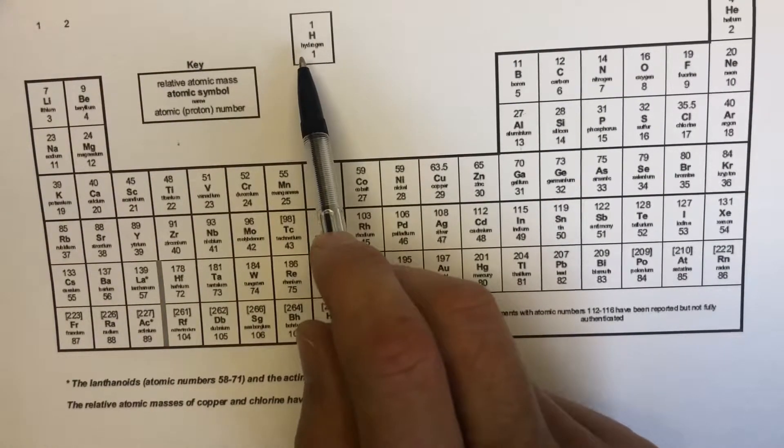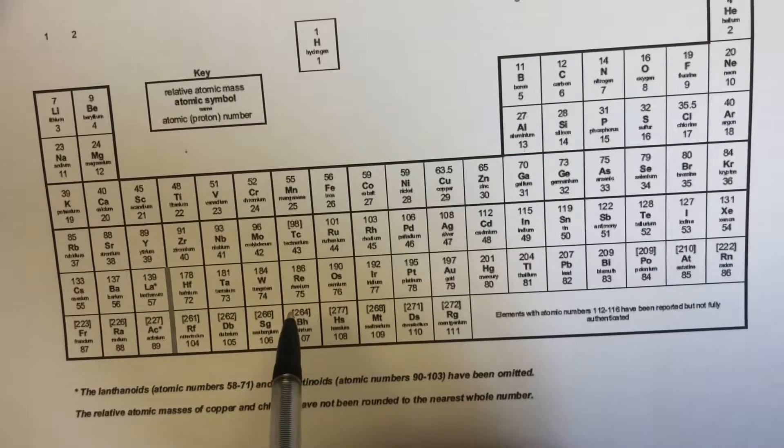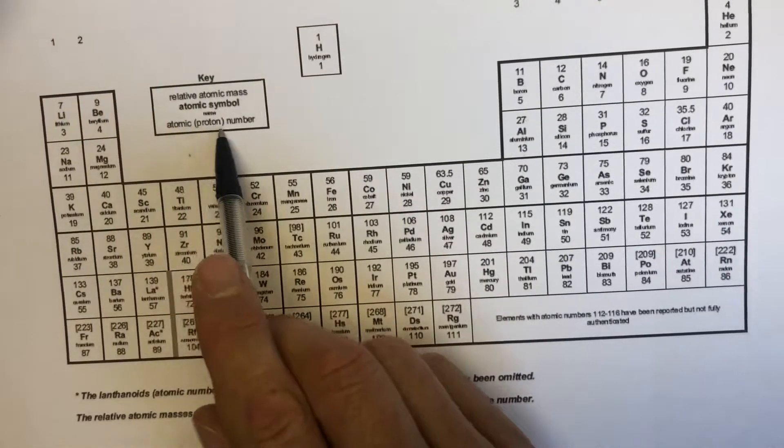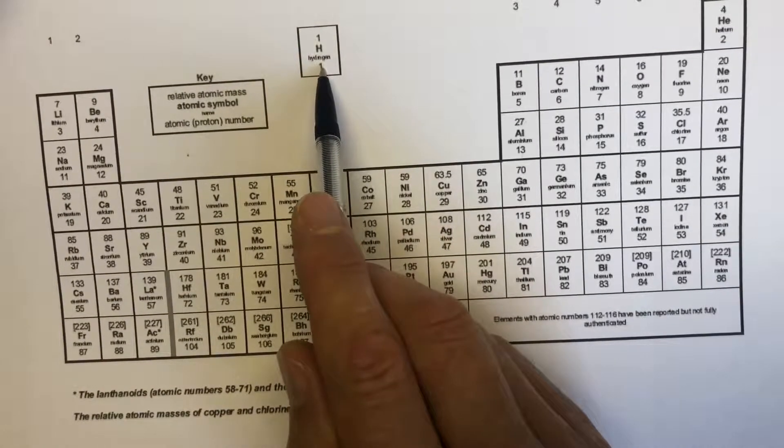We have them here in the periodic table arranged in order of increasing atomic number. The atomic number is the bottom number, it's the number of protons present in the nucleus, so hydrogen has one proton.